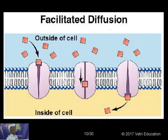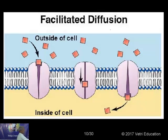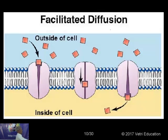This diagram shows facilitated diffusion in more detail. From the region of higher concentration outside the cell, molecules attach to protein molecules in the membrane, move through them, and finally reach the inner side of the cell. The facilitated diffusion takes place with the help of protein molecules, and this slide beautifully shows how facilitated diffusion occurs from outside the cell to the inside.